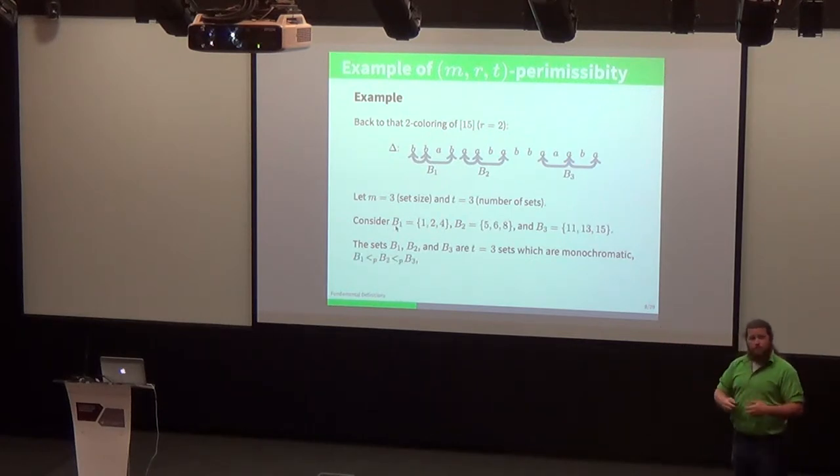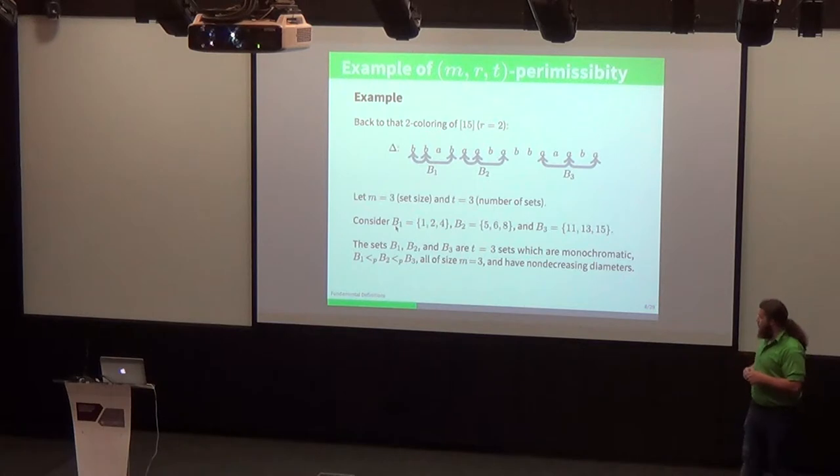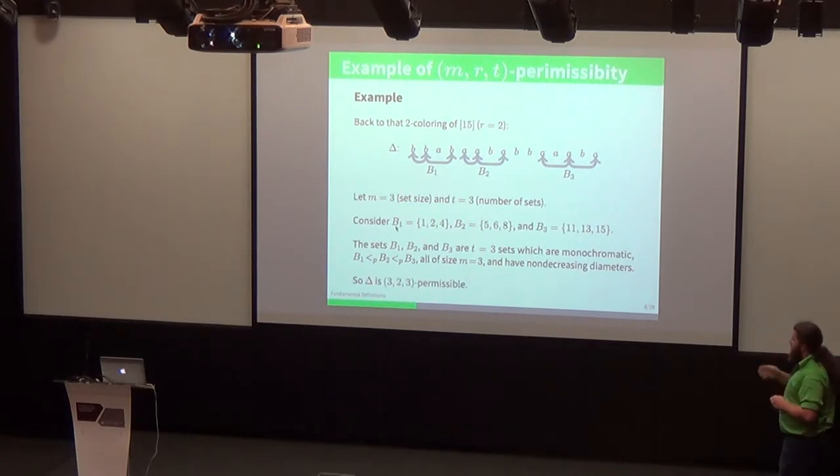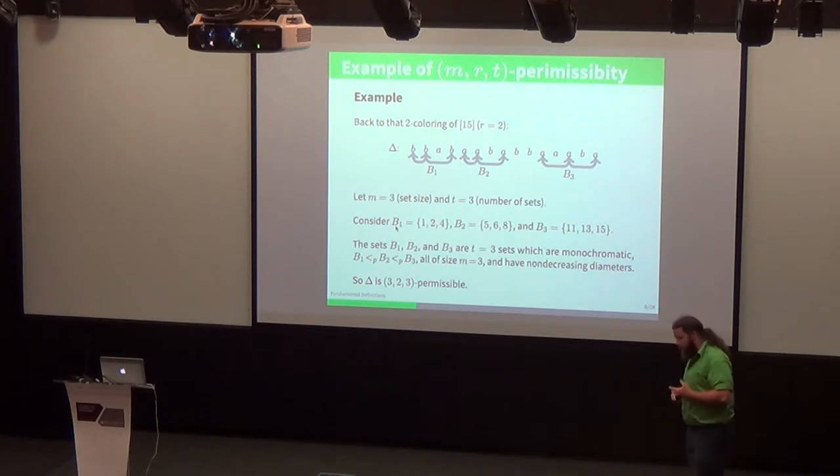They don't overlap, they all precede one another, they all have cardinality 3, and they all have non-decreasing diameters. The diameter of set B1 is 3, B2 is also 3, and the diameter of B3 is 4, so they don't get any smaller. And so what that means is that our string delta is 3, 2, 3 permissible. Our M was 3, we used two colors, and picked three sets out of these. So this string is 3, 2, 3 permissible.